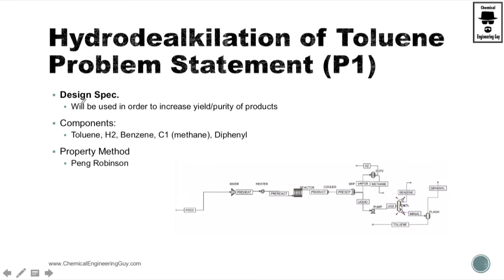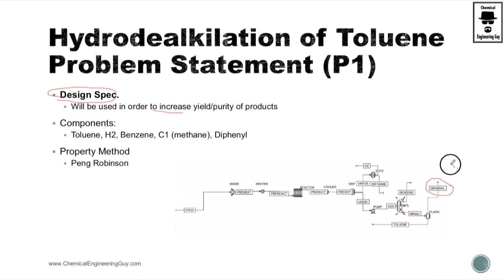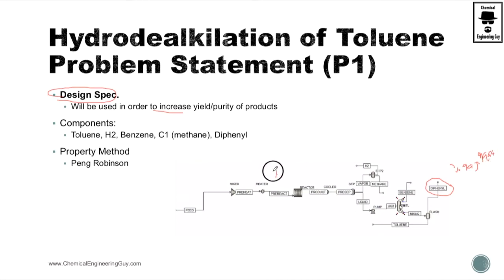Talking about the specifications, we're going to use design specifications in order to increase the yield and purity of the products. For example, even though we may have diphenyl at 99% purity, we can look at what we need to do to increase this to 99.999%. We can also look at increasing conversion — say from 70% up to maybe 95%.